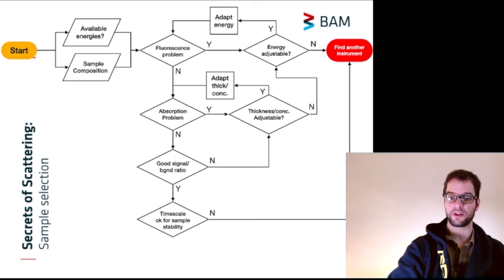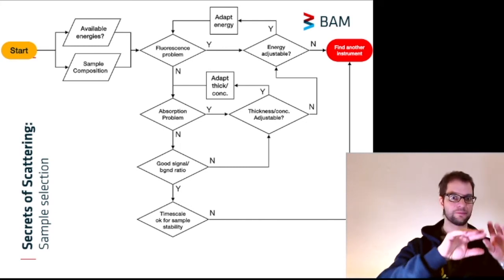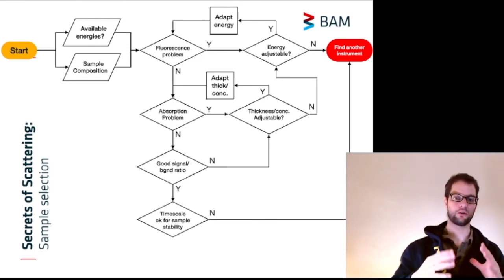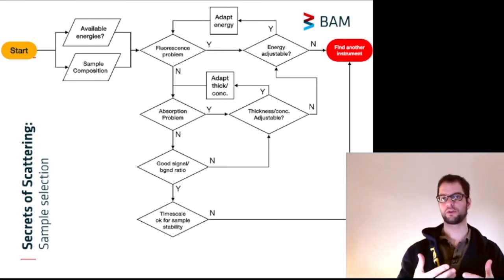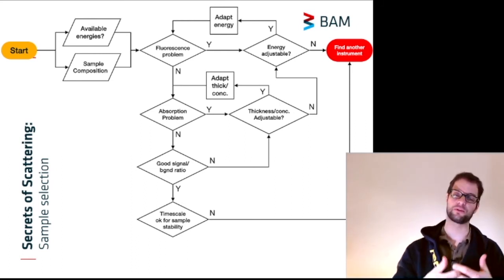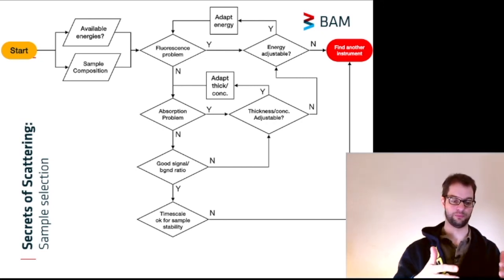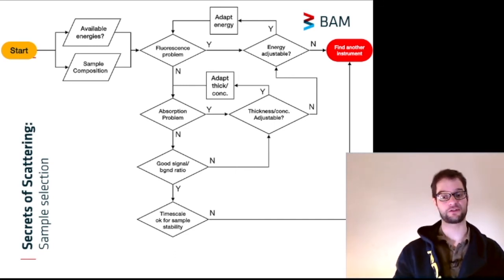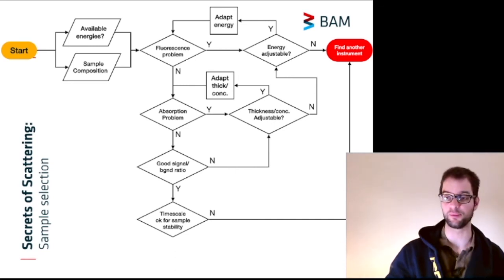Lastly, you want to check whether the time scale of the measurement is okay for your sample stability. In our laboratory instrument, we typically take about four to eight hours per sample. If you have a sample which sediments, for example, or which deteriorates over that amount of time, or if you want to measure scattering from sample developments over time that happen on a short timescale, for example, you're looking at a particle growth in a reaction, then the laboratory instrument is not the correct instrument for you. You will want to go to a beamline in that case.